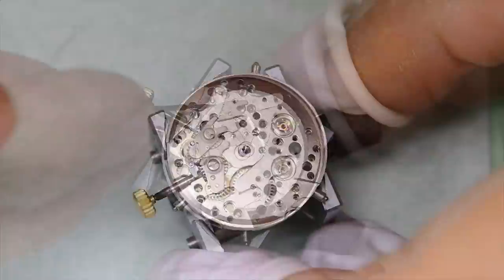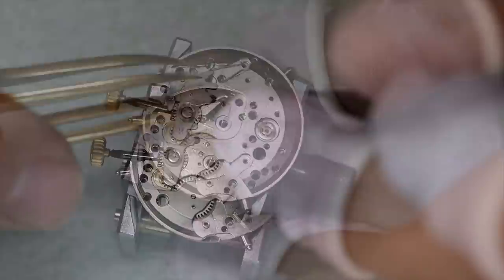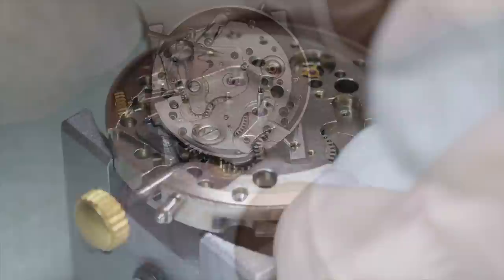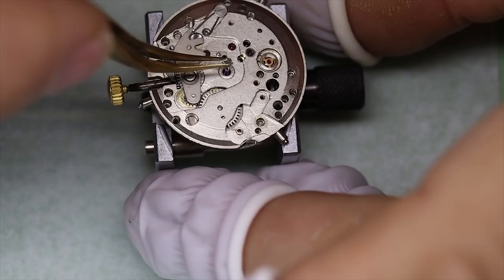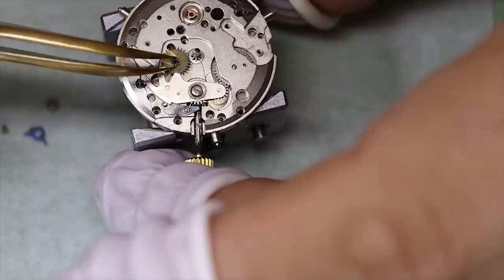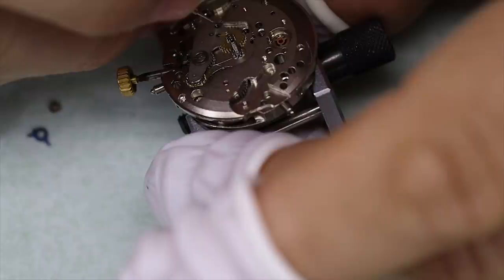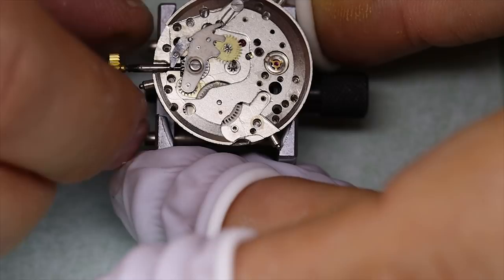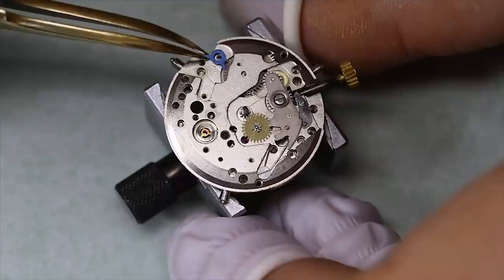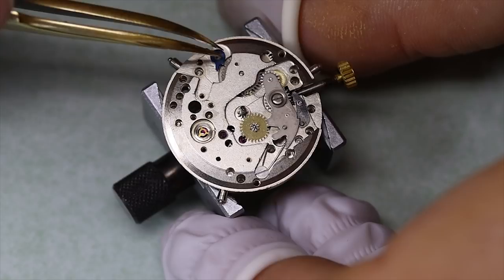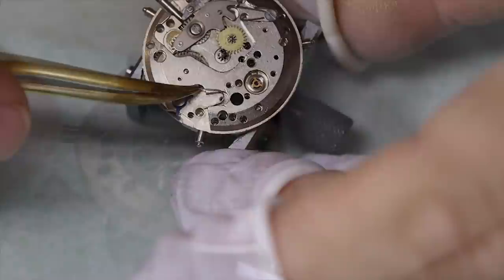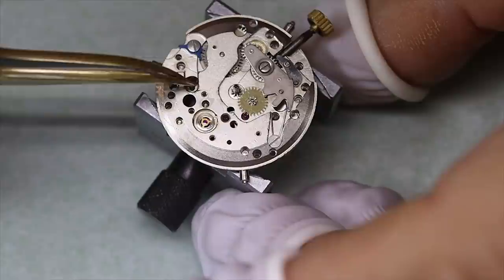We're using some grease on these contact points in the keyless works. The grease I'm using here is, you might see, it's blue, it's a 9504. But you can use a lot of different greases. If you're in the market for one grease only, I'd go for 8300. You can also go for 8200. All right, we need to put the click back on as well. And this is also something we see from these pin palette movements, a blued click. For some odd reason, I like to do that. Maybe to make it feel a little bit less cheap, but it is a nice little touch.